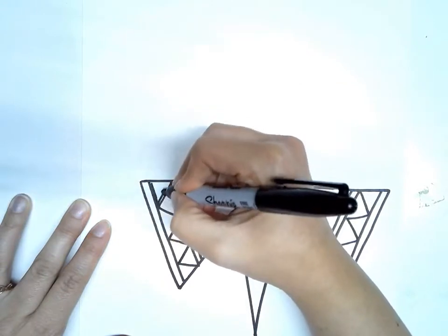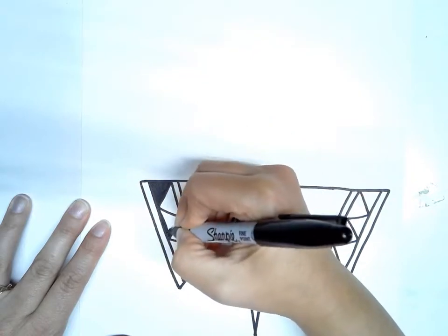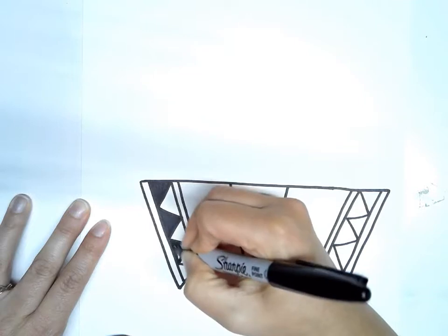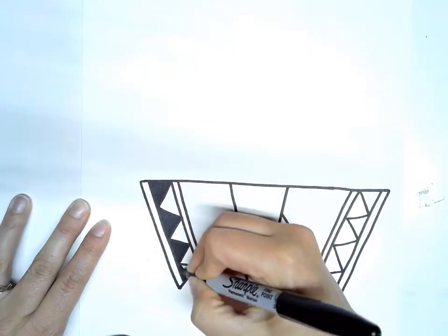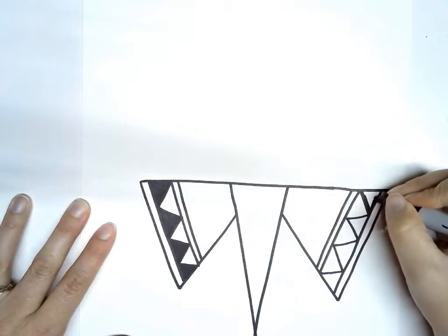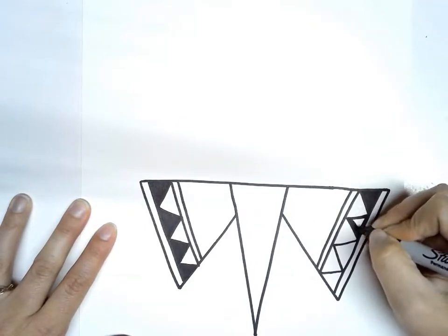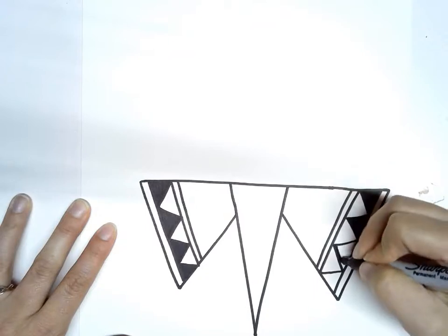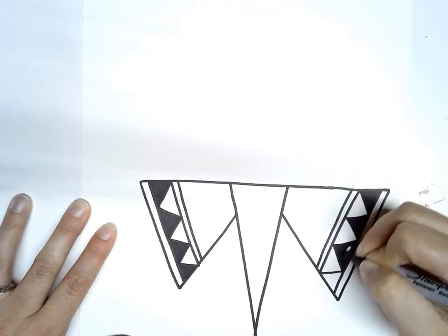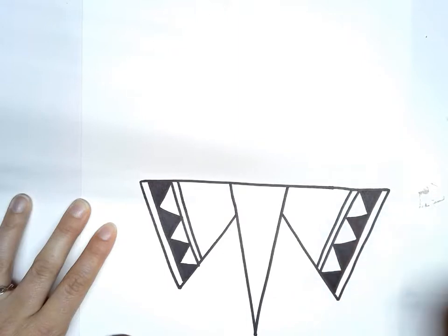And then you can color in these triangles so that every other one is black and the opposite one is white. So you can just quickly color those in to make that black and white triangle pattern. And the same thing on this side.